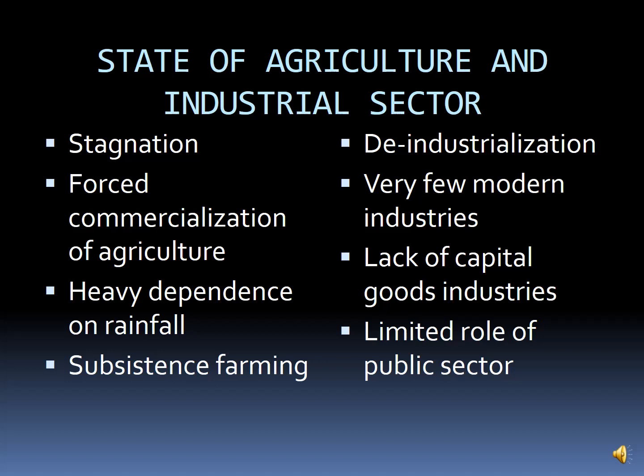There were very few modern industries in the second half of the 19th century. There were certain industries like cotton, jute, iron and steel, paper, sugar, and matchbox. But Britishers did not put any efforts to establish more industries in our country, which led to a setback. There was also a lack of capital goods industries. One notable industry that existed was TISCO — Tata Iron and Steel Corporation — which was established in the year 1907. Remember the date: 1907.